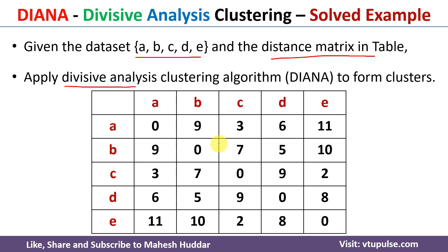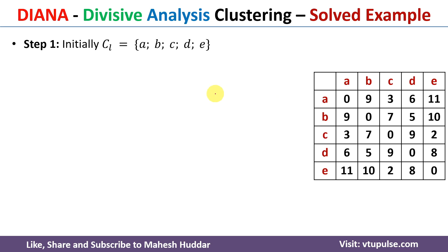In previous videos I have discussed other clustering algorithms like K-Means, K-Means++, Fuzzy C-Means, and hierarchical clustering — links for those are in the description below. The first step of the Divisive Analysis clustering algorithm is to initialize CL to all the data points given to us. CL is the initial cluster containing all five data points.